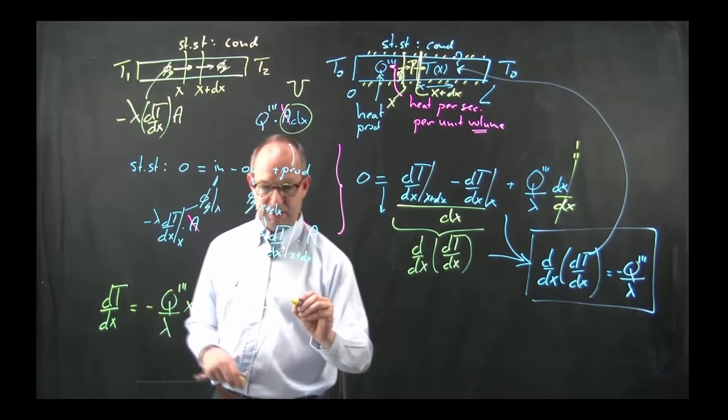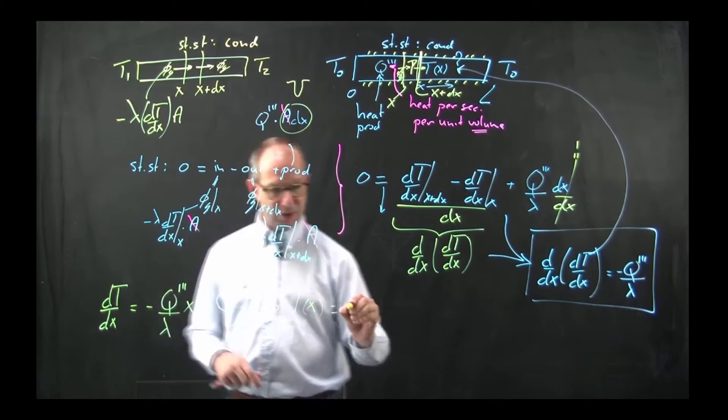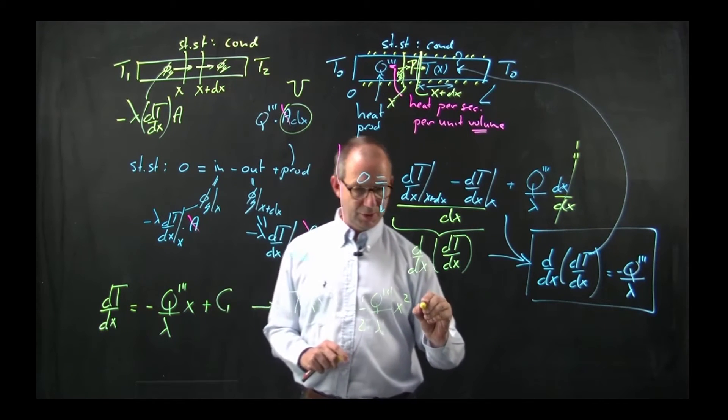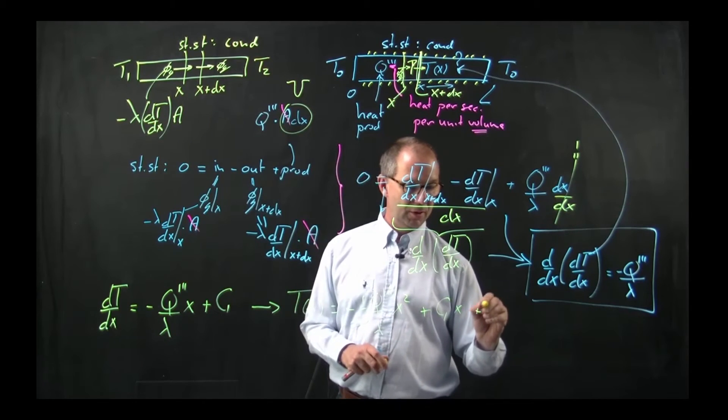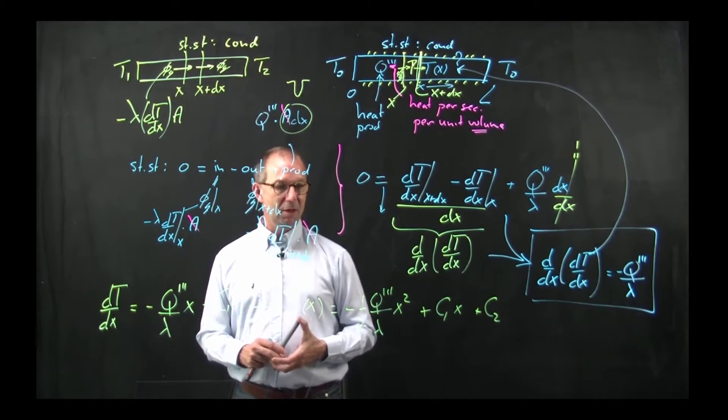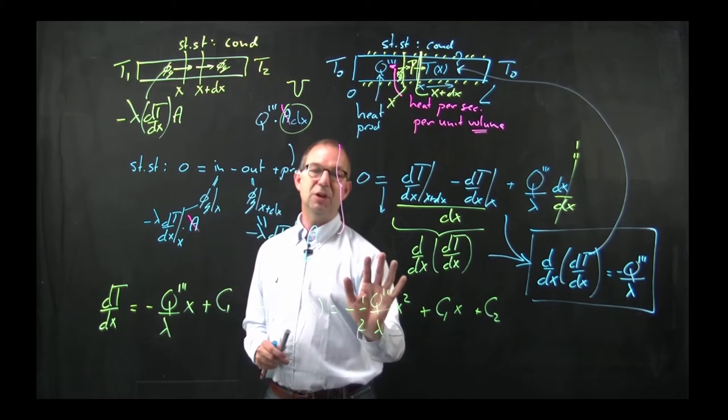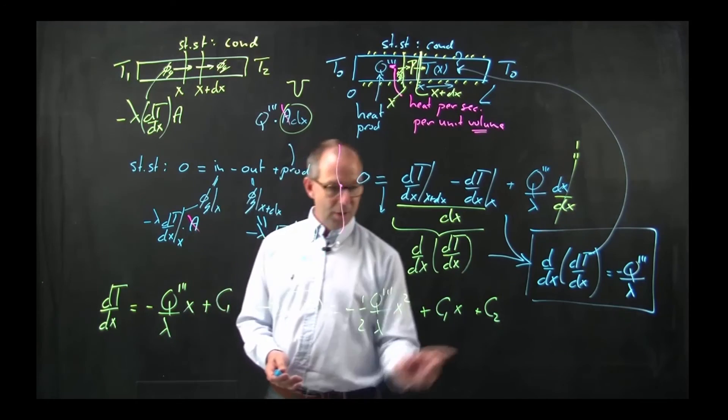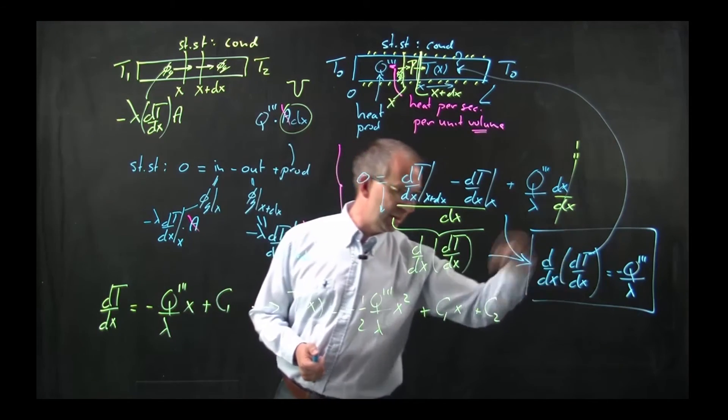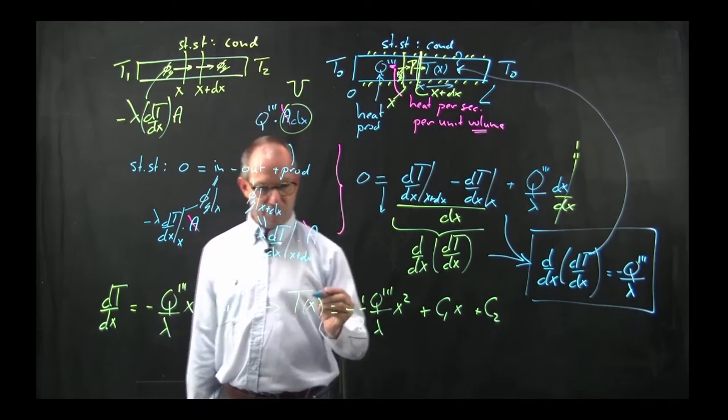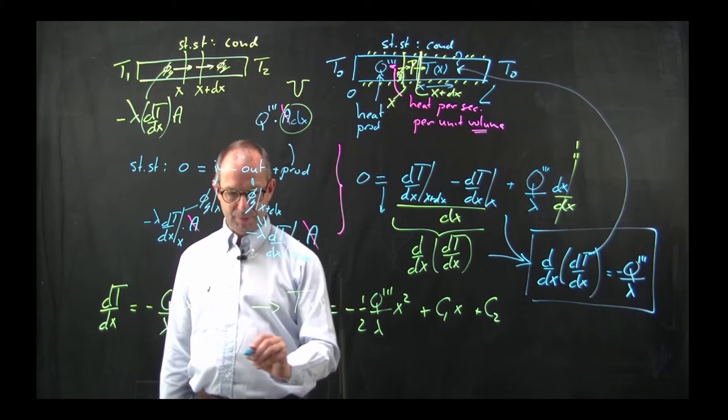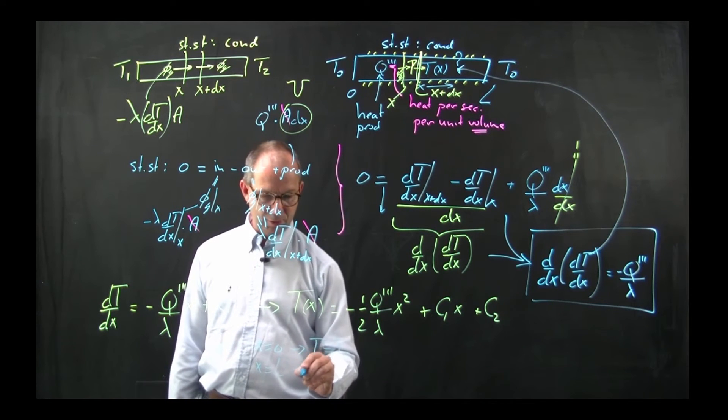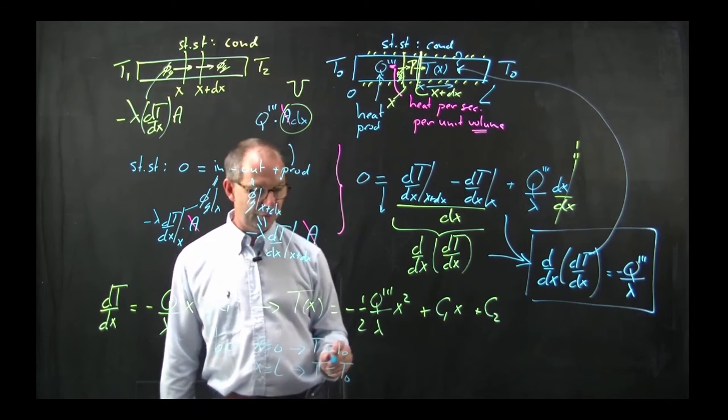This can be easily integrated again to give me T. Integrating x gives you an additional half times x squared, c1 integrating c1 times x, and another integration constant c2. Again, pretty much like we had in the previous movie, but this term was absent because Q was zero. Now you see it's a parabola. Two integration constants like we had. I can find them by requiring my boundary conditions: at x equals zero, T equals T₀, and at x equals L, the length of the rod on the other side, I also took it T₀ to keep life simple.